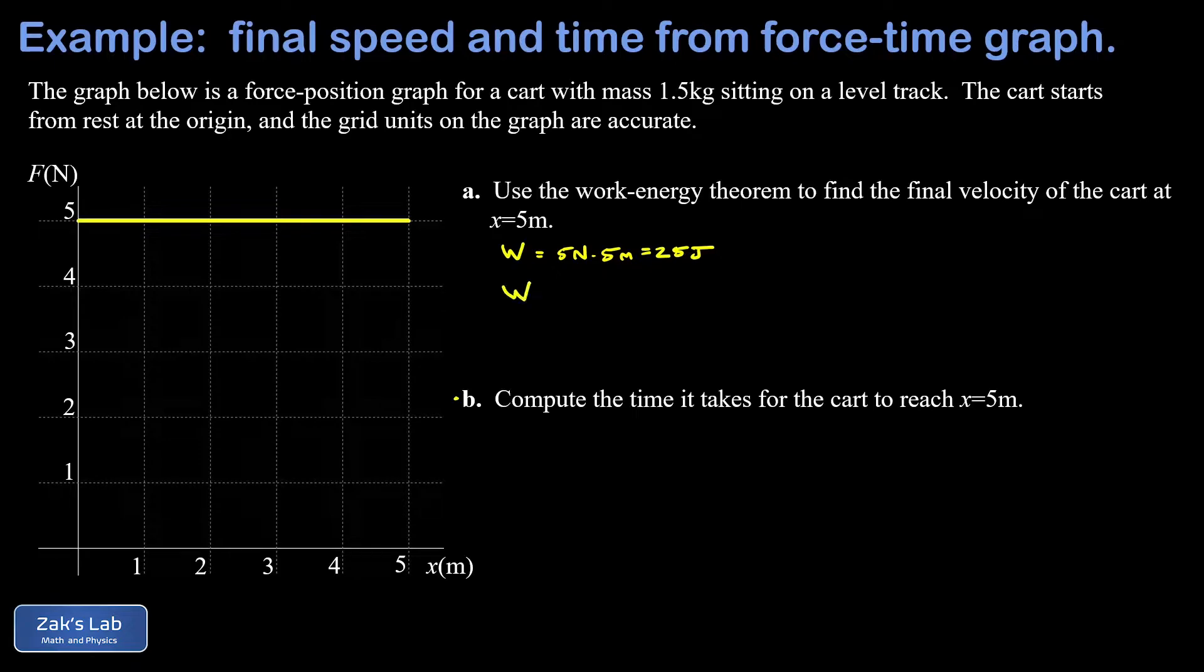Then we apply the work energy theorem. So the work we pump into this cart results in a change in kinetic energy, and that change in kinetic energy, that's always final minus initial. The initial kinetic energy was zero because it started from rest. The final kinetic energy is one half mv squared for the final velocity vf.